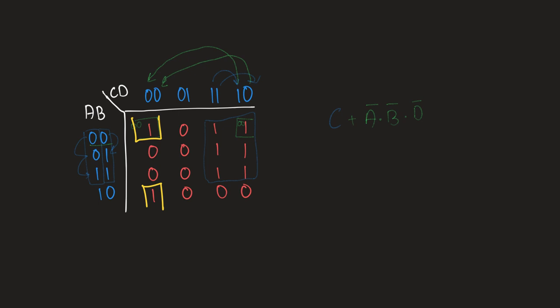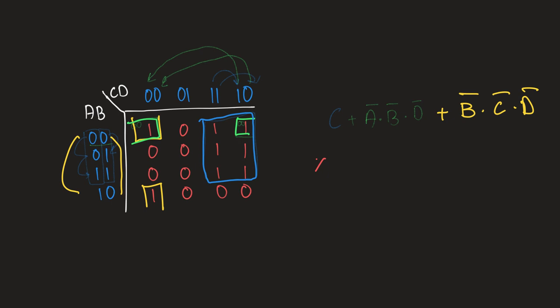There's also another square we need to include since our table wraps around. In this square, the value of A changes from 0 to 1. The value of B doesn't change — it stays 0 — so we add B-not. The value of C is constant at 0, and D is also constant, giving us C-not·D-not. So our final equation is: X = A·B·D-complement + B·C·D-complement + C. That's it for this video — see you in the next one.